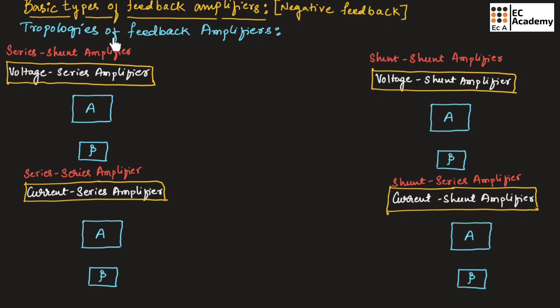Now let us understand different topologies of feedback amplifiers. Here we will discuss different block diagrams or topologies of feedback amplifiers. There are four types of feedback amplifiers. For each feedback amplifier, there will be an amplifier stage and a feedback stage. We need to make the connection between the amplifier stage and the feedback stage depending upon the type of amplifier.